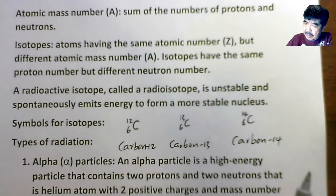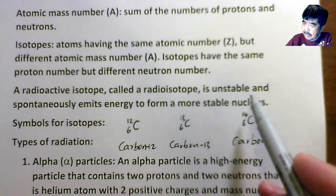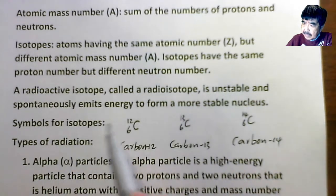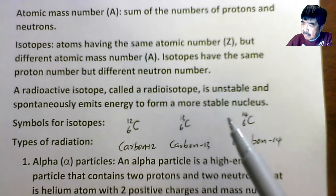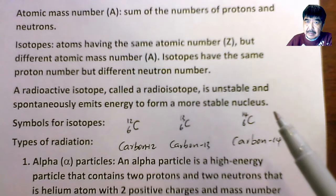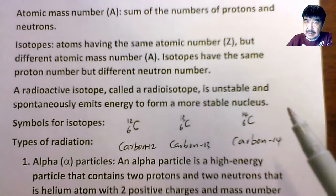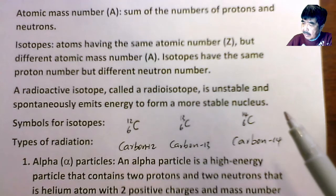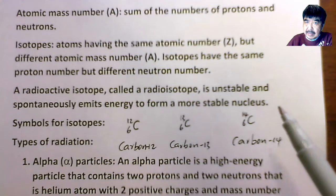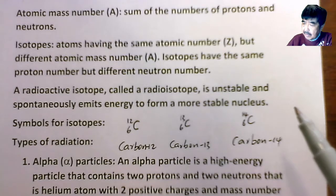A radioactive isotope, called a radioisotope, is unstable and spontaneously emits energy to form a stable nucleus. As I said, a nucleus has different energy levels, and a nucleus at a high energy level tends to release energy to become more stable.